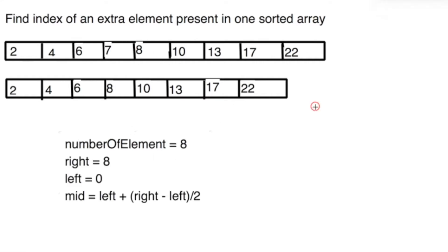Here we have the number of elements is 8 in the second array, so we will consider it as the right. We will start from the rightmost and left, so we will calculate the mid, which is left plus right minus left divided by 2.